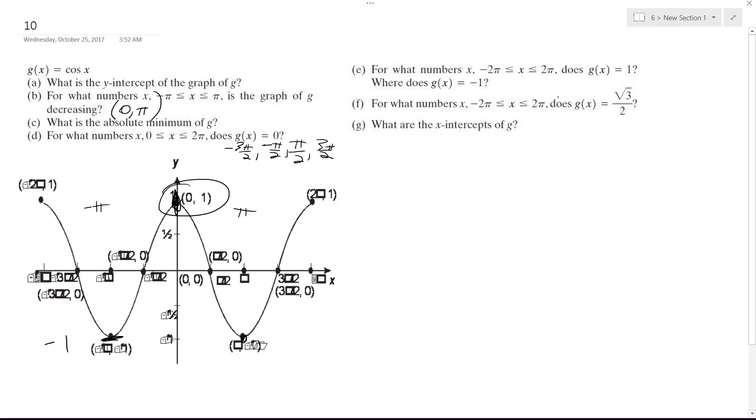For what numbers from negative 2π to 2π does g(x) equal one and then negative one? It equals one at negative 2π, zero, and 2π. It equals negative one at negative π and π.